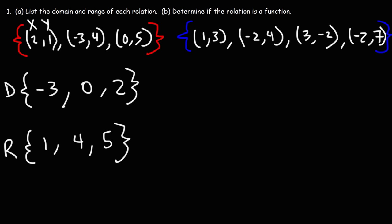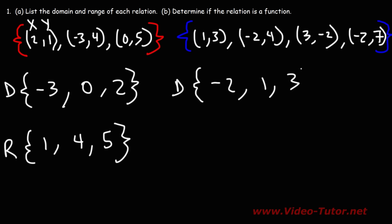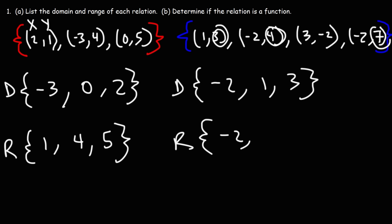Now let's do the same thing for the other relation. Writing out the domain, the x values are negative 2, 1, and 3. For the range, the y values in ascending order are negative 2, 3, 4, and 7.